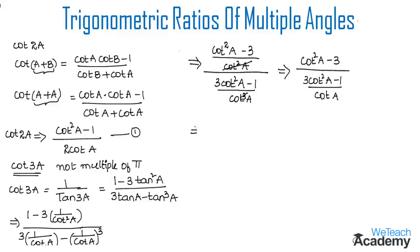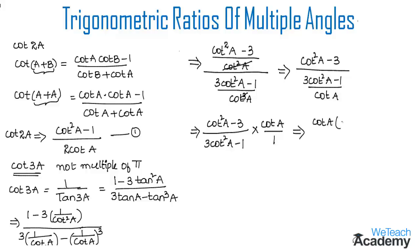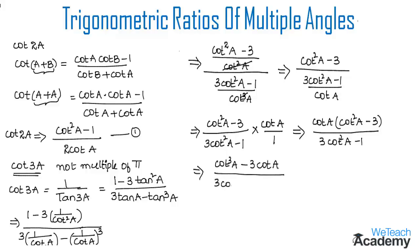Now let us simplify further. We get (cot²a − 3) divided by (3 cot²a − 1), and the cot a becomes the reciprocal when multiplied, giving × cot a / 1. By multiplying, we get cot a · (cot²a − 3) / (3 cot²a − 1). Multiplying cot a into the group gives (cot³a − 3 cot a) / (3 cot²a − 1).